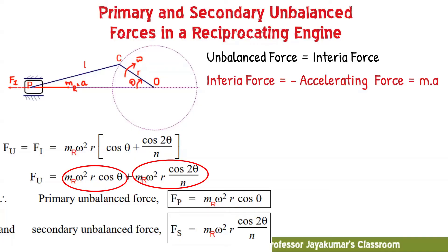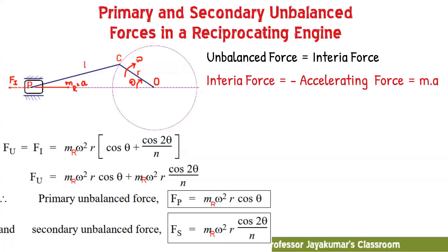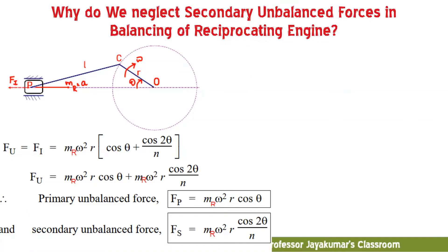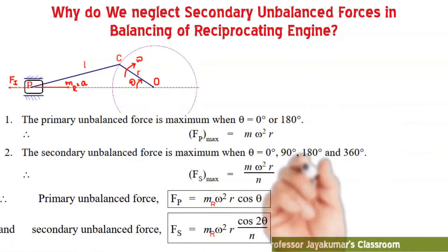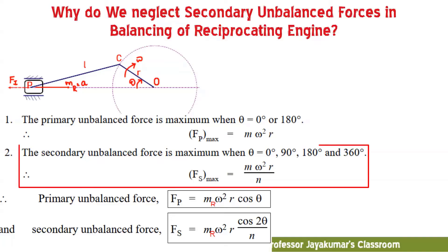Multiplying mr with ar, we get the unbalanced force equation. Expanding that equation, we get two terms: the first term, mr·ω²r·cos θ, is known as the primary unbalanced force (Fp); the second term, mr·ω²r·(cos 2θ / n), is known as the secondary unbalanced force (Fs). Fp is maximum when θ = 0° or 180°, and Fs is maximum when θ = 0°, 90°, 180°, or 360°.